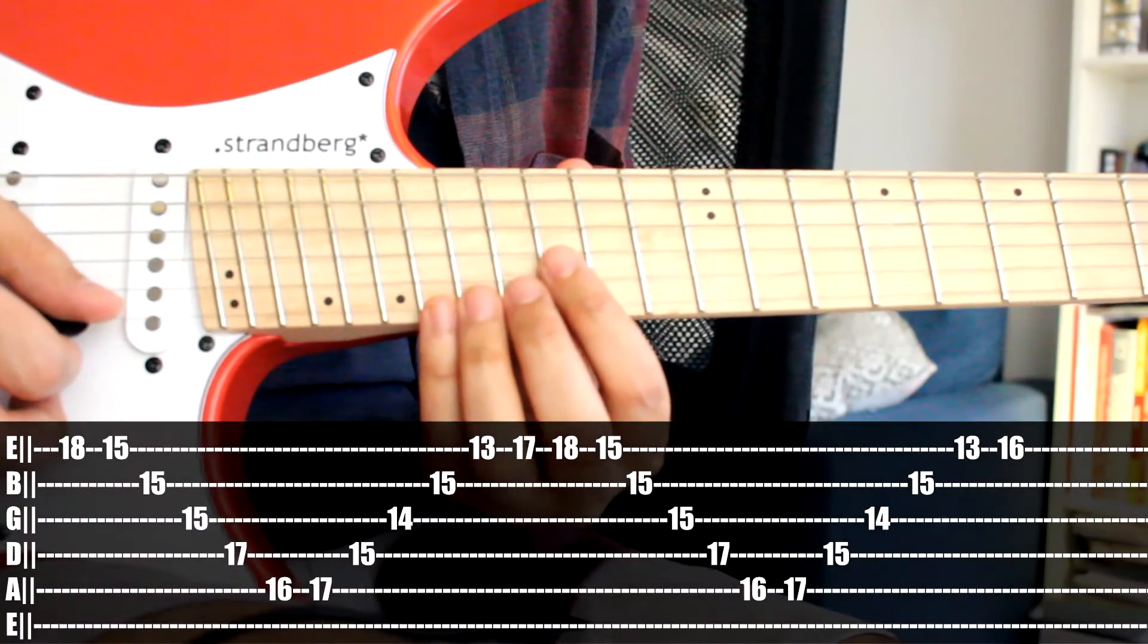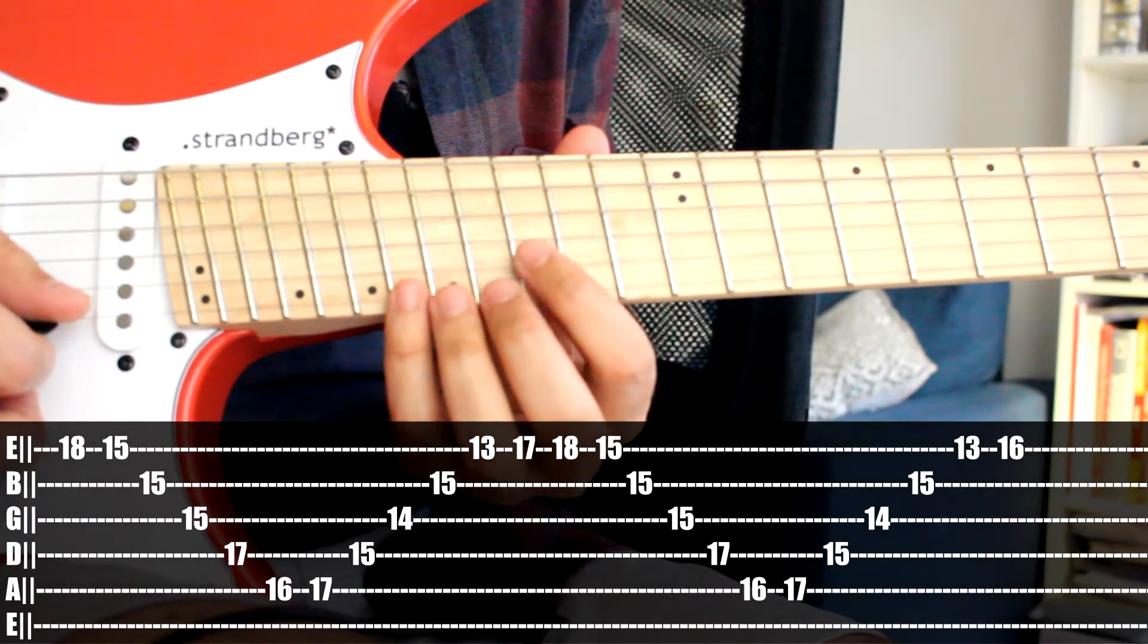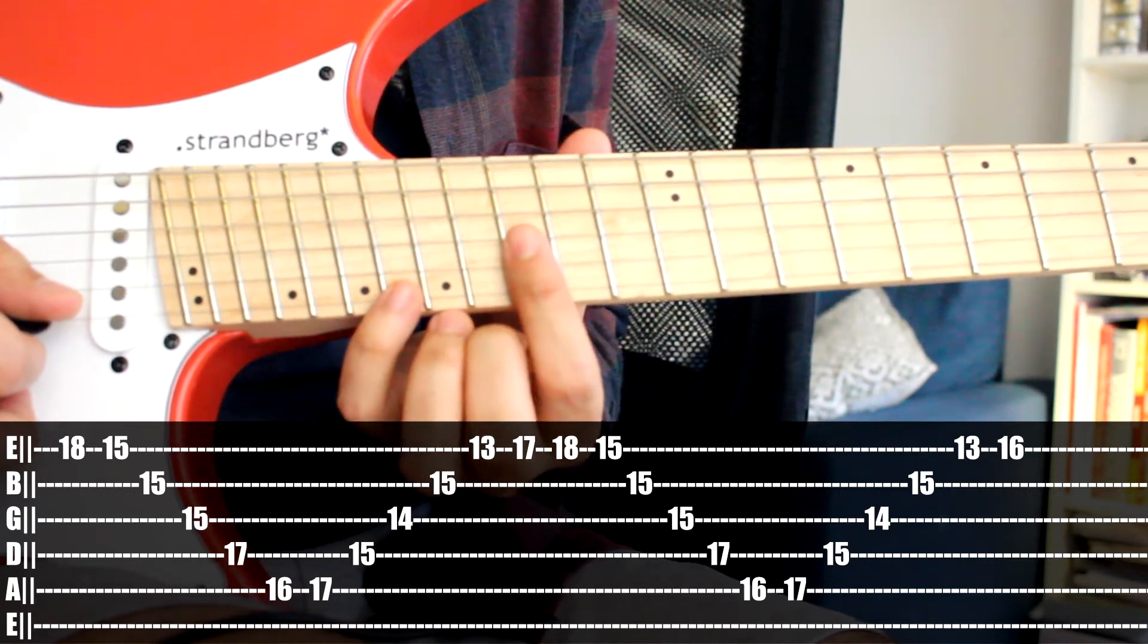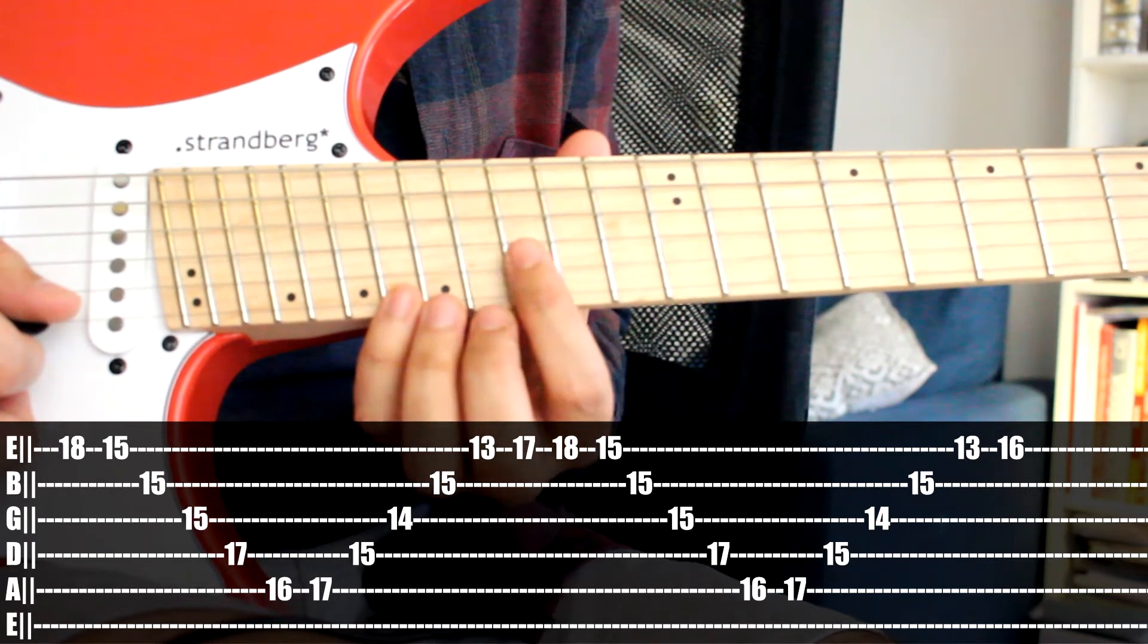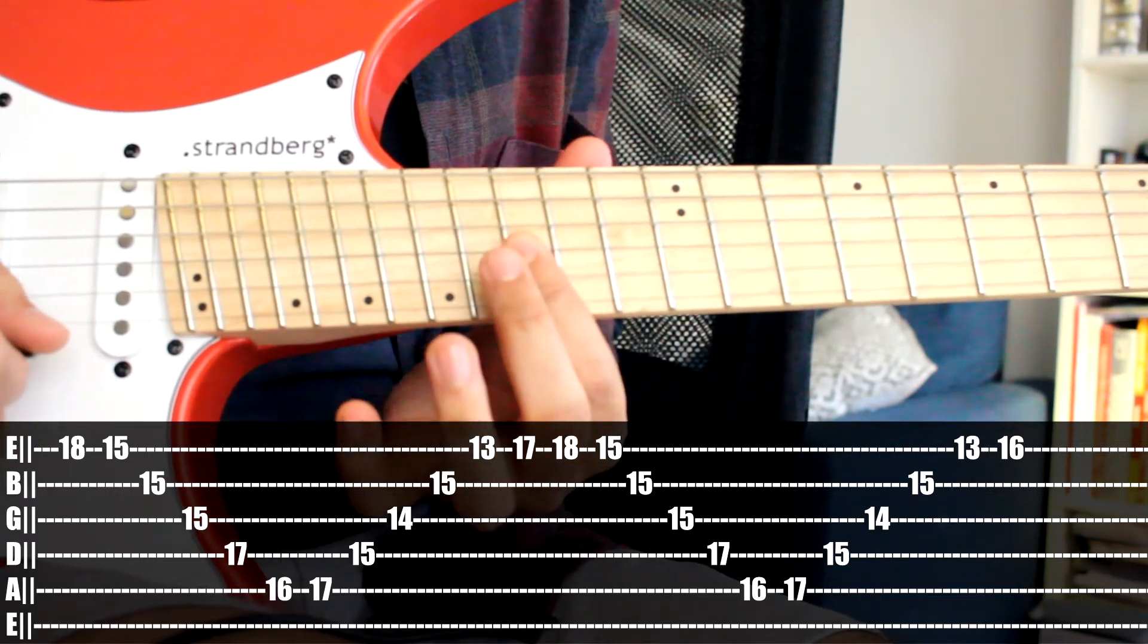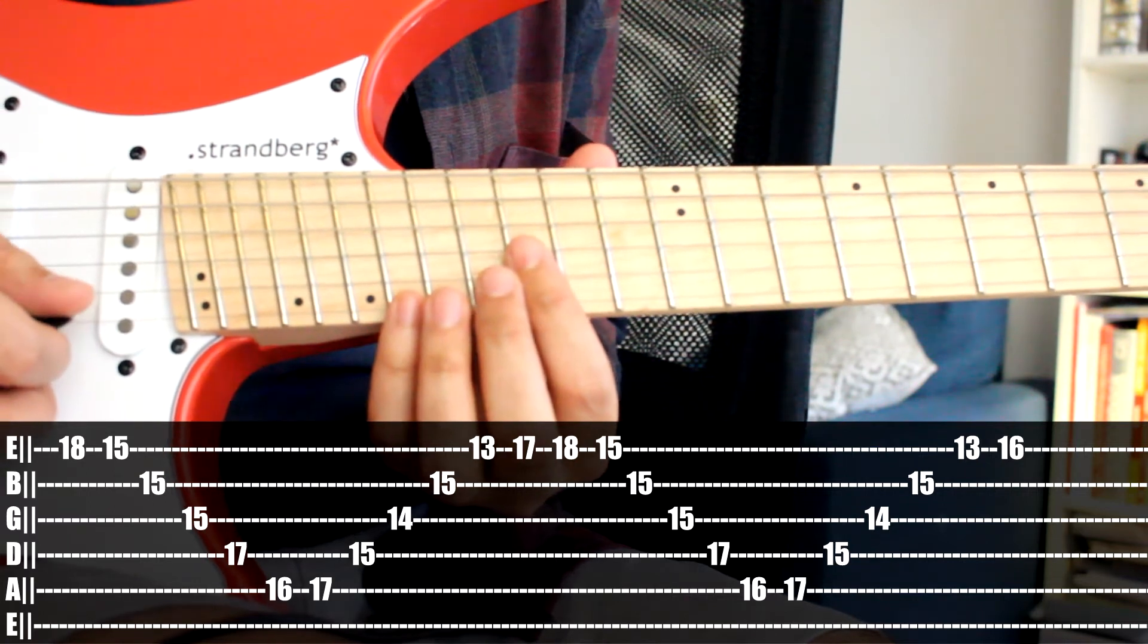Alright, for the next pattern you're going to want to be starting with your pinky on the 18, the high E, then you're going to bar the 15 notes with your index finger: E, B, and G. You're going to pull off 18, 15, sweep upwards on the B string, 15.